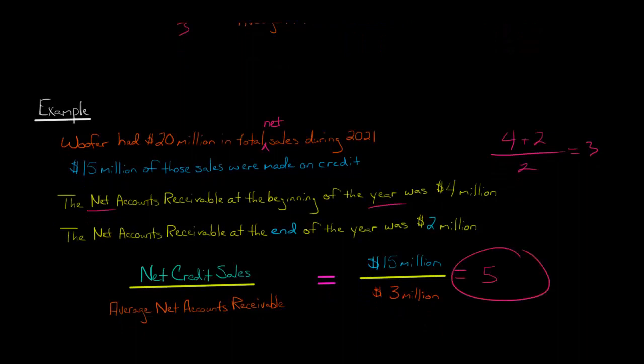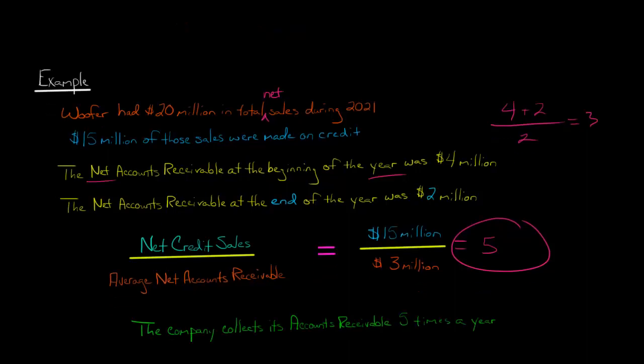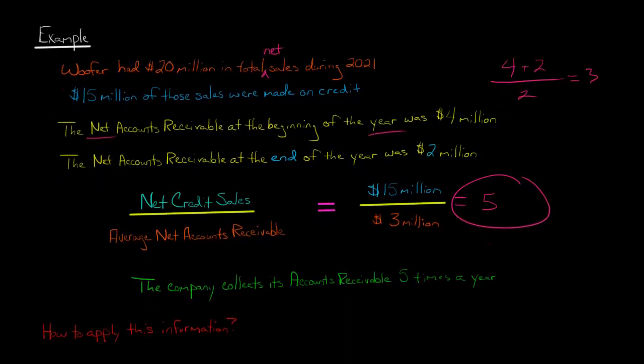Now, what does that mean? That means that this company, Woofer, collects its account receivable about 5 times a year. So now that you have that information, what can you do with it?